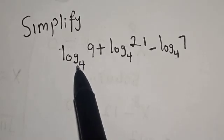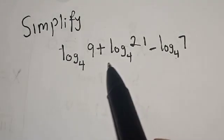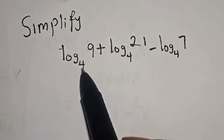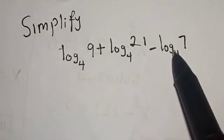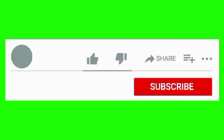Hello everyone, welcome to Magicis. In this class we want to simplify this given equation: log₄ 9 + log₄ 21 - log₄ 7. Before we move on, like, share, comment and subscribe. Thank you.